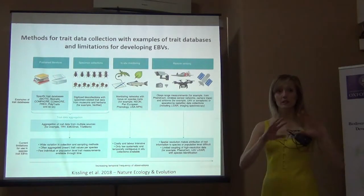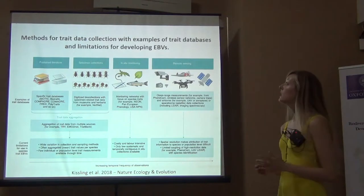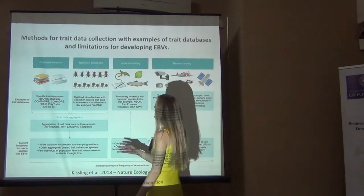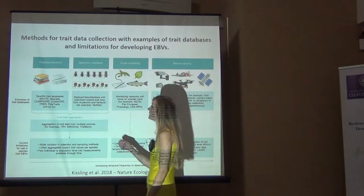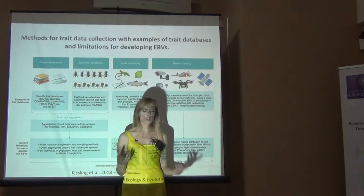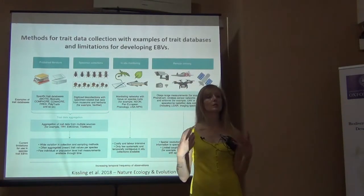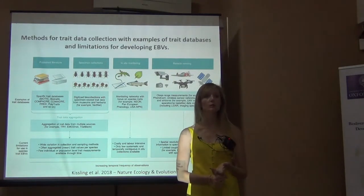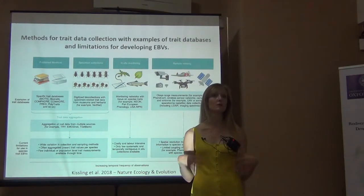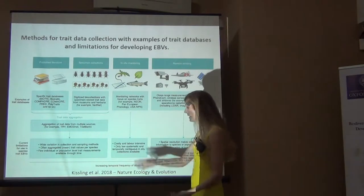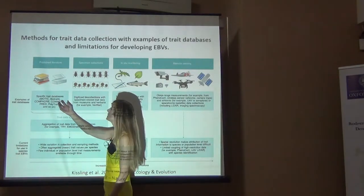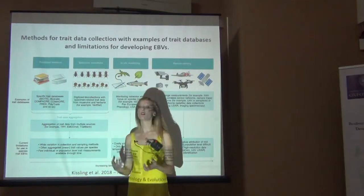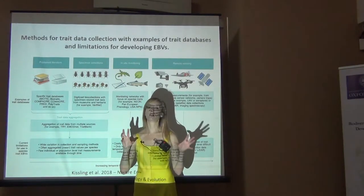So we've talked about these different types of traits. How do we get this data? There's a variety of different sources. One is coming from the published literature — we can go to the published literature and pull out specific information that people have published, things like the size of organisms, the shape of organisms, the timing of various activities, such as the flowering of plants. Databases like Compadre and Comadre are actually pulling out that data from the published literature and putting it in online databases.